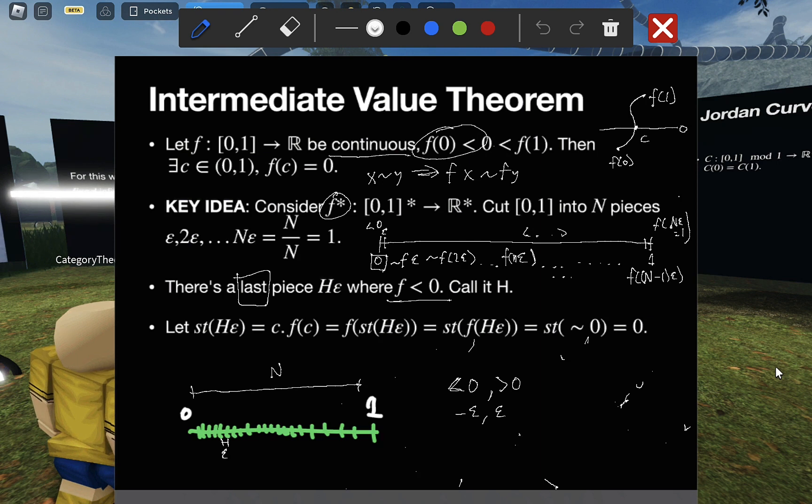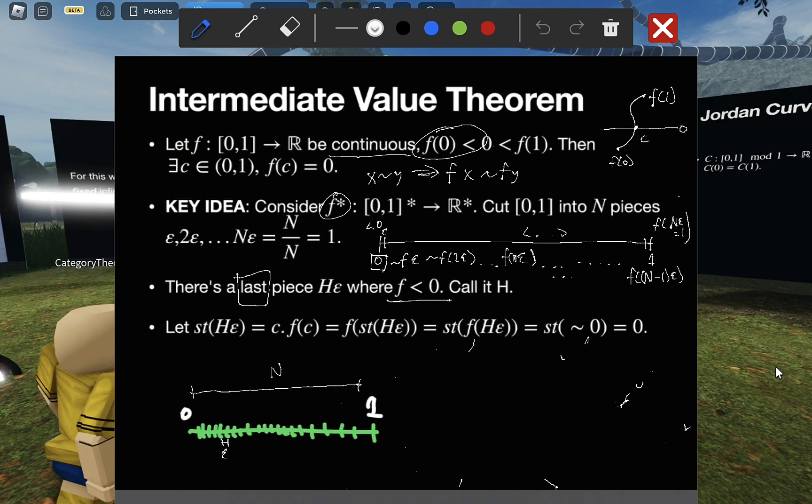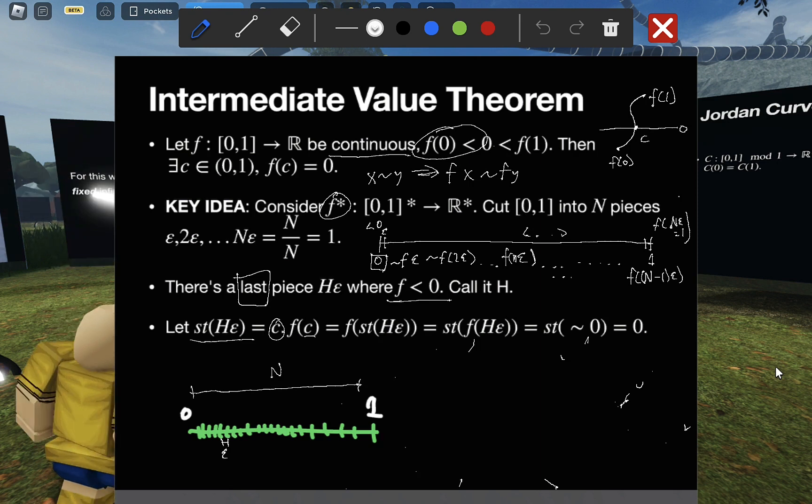That means if you take its standard part, this gives you the candidate point. And we can just work that out by calculation. Right here now. Specifically, the property of being continuous is equivalent to a function commuting with its standard part. The c we wanted is given to be the standard part of this thing. So we just plug it in.